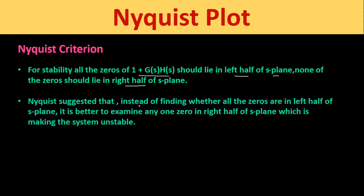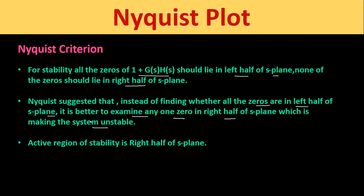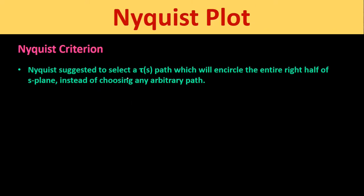Nyquist suggested that instead of finding whether all the zeros are in the left half of the s-plane, it is better to examine any one zero in the right half of the s-plane which is making the system unstable. According to Nyquist, the active region of stability becomes the right half of the s-plane. Nyquist also suggested to select a path τ(s) which will encircle the entire right half of the s-plane, instead of choosing any arbitrary path.